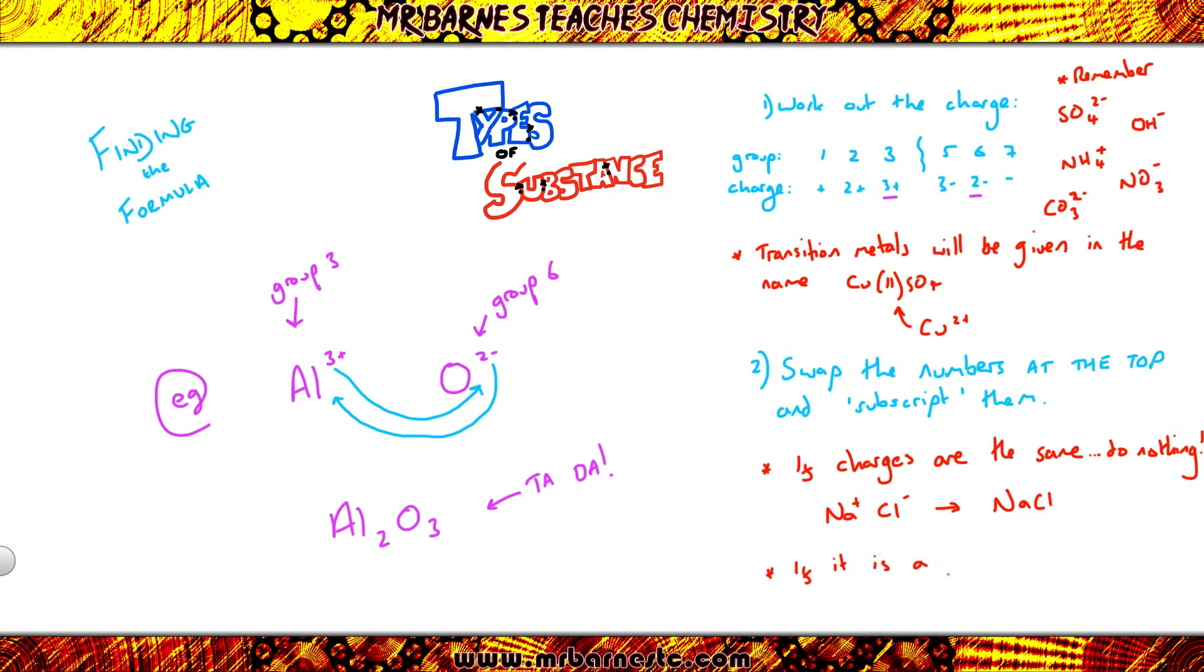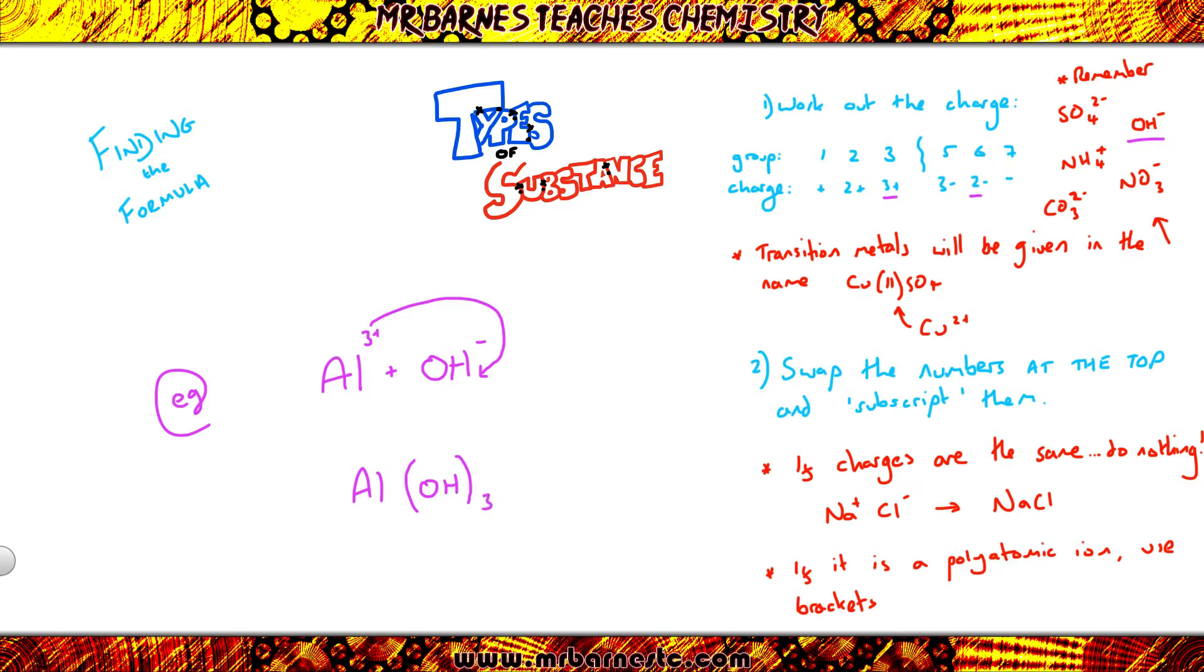And then the second thing, if you have a polyatomic ion, you must put a bracket around it if you're doubling it. So for example, aluminium reacting with a hydroxide. Aluminium is 3 plus, hydroxide as you can see up here is OH minus. I take the number at the top, I move it down to the bottom, but because I've now got 3 OH minus polyatomic ions, I must put a bracket around to show I've got 3 of everything.